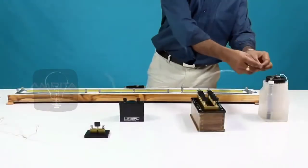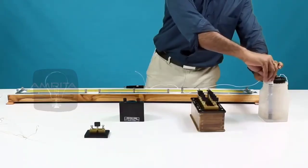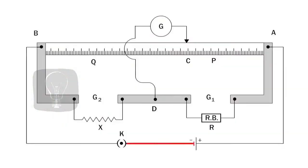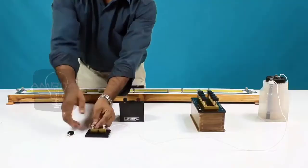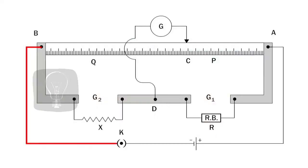Now take another connecting wire and connect it between the negative terminal of the Leclanche cell and one end of the key. The other end of the key is connected to the terminal B of the meter bridge with another connecting wire.